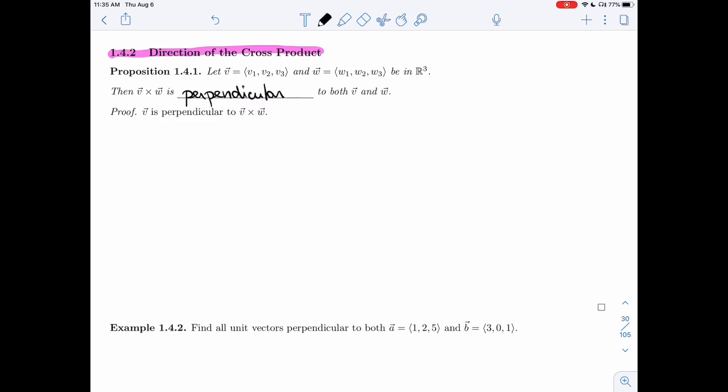So I'm going to prove just one of the two. The other one is very similar. If I want to show that V is perpendicular to the cross product, then I'm going to take the dot product, and I want to prove that that will always be zero. We have components, so I'm going to use them.